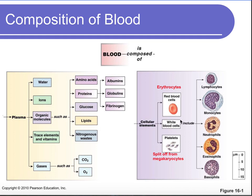Going back to white blood cells, we have different types: lymphocytes, monocytes, neutrophils, eosinophils, and basophils. We'll discuss more about white blood cells and their function when we get to the immune chapter later in the term. For this week, we're really going to focus on our red blood cells and our platelets.